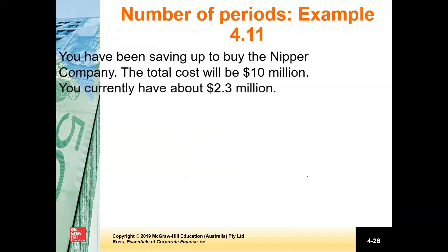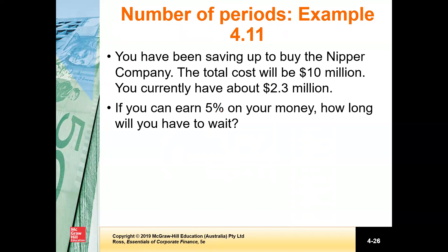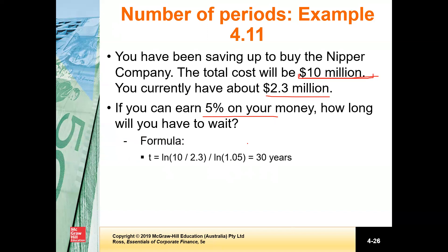Looking at this example: you have been saving up to buy the NIPA company. The total cost will be 10 million, and you currently have 2.3 million, and you can earn 5% on your money. So you are given a present value of 2.3 million, and you know how much you will need to make the investment. You also know the rate of return you're going to earn. So you need to find out how long it will take to grow 2.3 million to 10 million when you earn 5%.